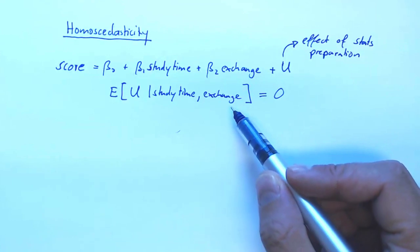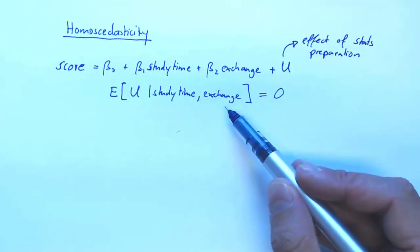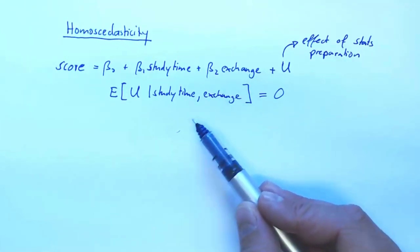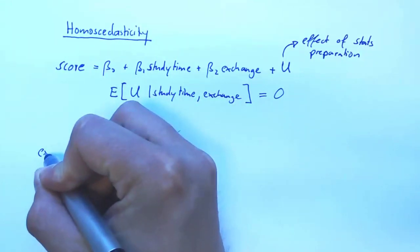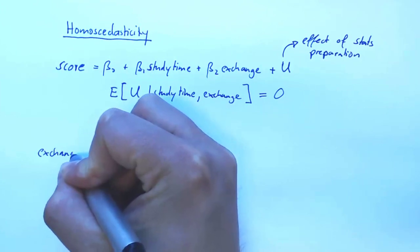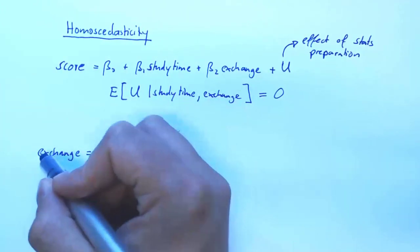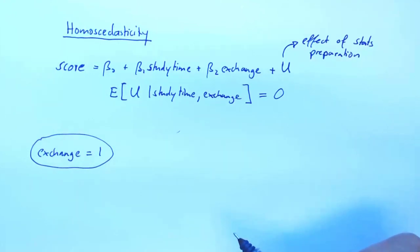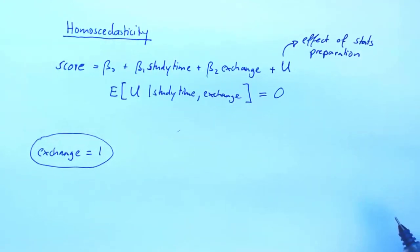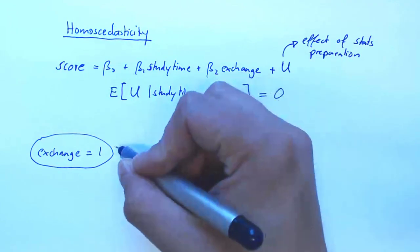Then let's look at exchange. So by observing exchange, what do we learn about U? And let's assume it works like this. If you're an exchange student, so you have exchange equal to one, then you're from a different university, possibly outside of Sweden. And let's suppose that outside of Sweden, there's two groups of universities. Like one is very math oriented.